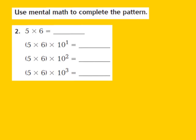Let's take a look at question number 2 together. Our job is to use mental math to complete the pattern. For question number 2, they give us 5 times 6. I know that 5 times 6 gives me 30, so I'll write down 30 as the product. This 5 times 6 equals 30 becomes my basic fact, and I'm going to use that basic fact and a pattern to find my product.